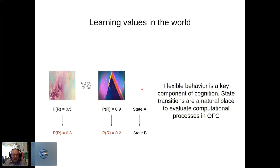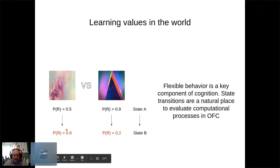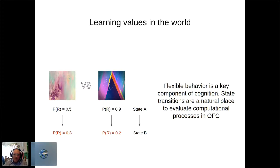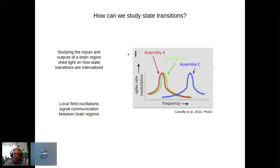A good way to interrogate these ideas is to force state transitions within the task. If we start with stimulus-outcome associations set at 0.5 vs. 0.5, then 0.9, we can call that 'State A.' Reversing the contingencies gives us a time point to titrate the underlying computations. These state transitions are a measure of flexible behavior — a key component of cognition — and allow us to study things in a more naturalistic, dynamic setting.